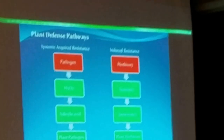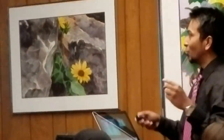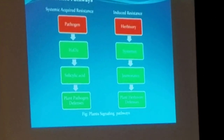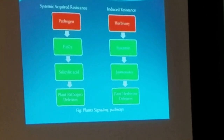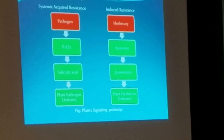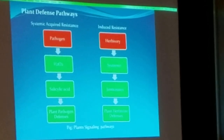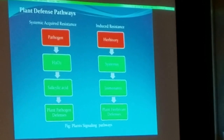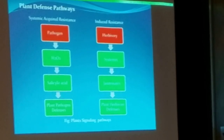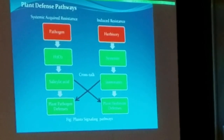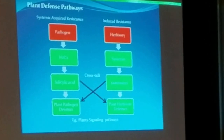I want to tell you something about the plant defense system. The plant has two main defense systems: one is the salicylate defense pathway and the other one is the jasmonate pathway. The salicylate defense pathway gets activated due to the presence of pathogen, and the jasmonate one gets activated due to the presence of herbivory. But often times, there is a crosstalk present between these two pathways.